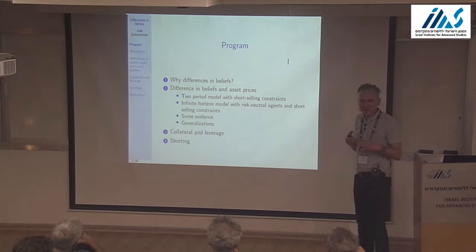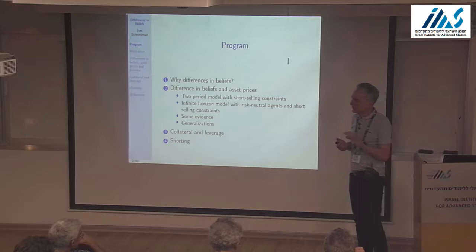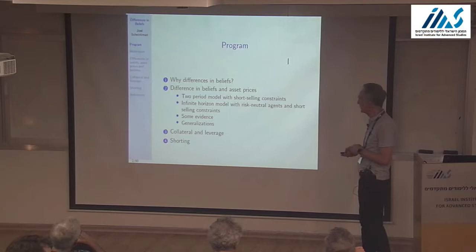Then I'll talk about the infinite horizon model with risk-neutral agents and short-selling constraints. That's the work that derives from an early paper by Harrison and Kreps — a paper that spanned maybe 20 years with very little attention from the profession. Now people came back to it thanks to these connections with bubbles.